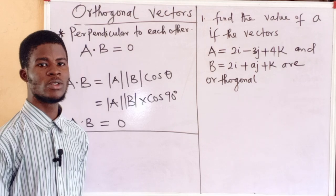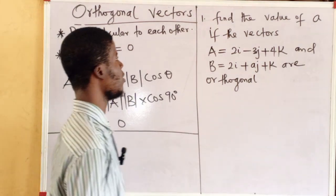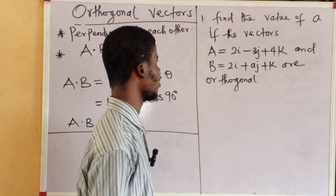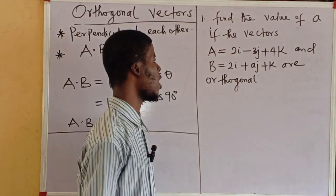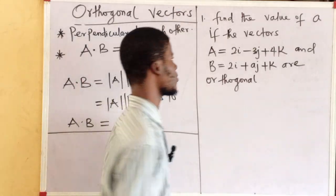On this note, let us solve this question on the board. We are to find the value of A if the vectors A equal to 2i plus 3j plus 4k and B equal to 2i plus Aj plus k are orthogonal.